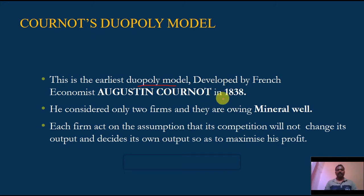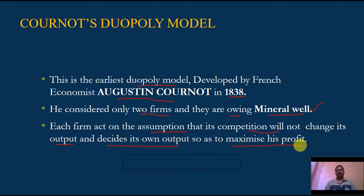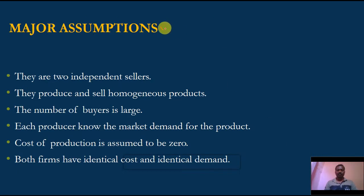This is the earliest duopoly model, developed by French economist Augustin Cournot in 1838. He considered two firms owning a mineral well, explaining the model through the working of a mineral well. Each firm acts on the assumption that its competitor will not change its output, and decides its own output so as to maximize its profit.